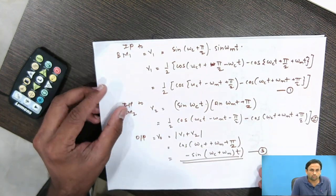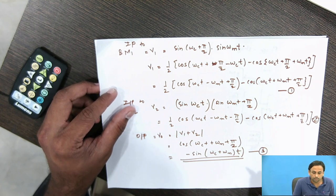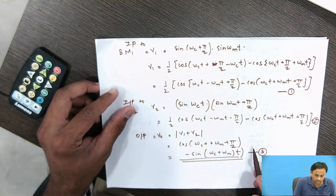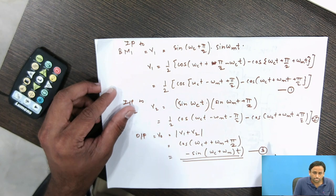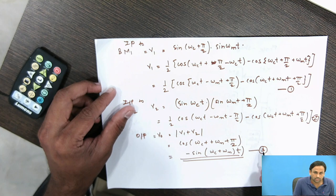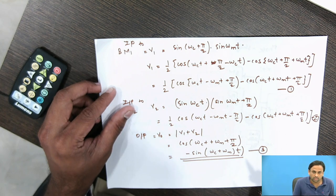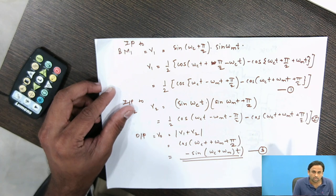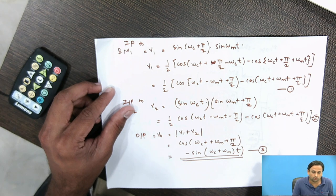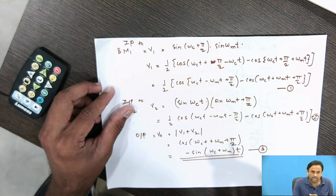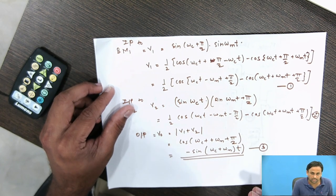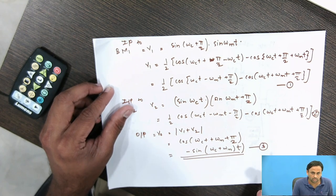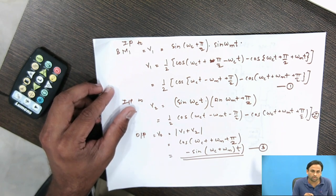Advantages of the phase shift method: there is no need for up-conversion frequency, and it is easy to generate the sidebands. The disadvantage is that phase shifting must be done for both the modulating signal and the carrier signal. The disadvantage of up-conversion from the filter method has been removed, but phase shifting both signals is a practical difficulty. This disadvantage is addressed in the third SSB method, where only the carrier signal is phase shifted and the modulating signal is not phase shifted.